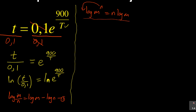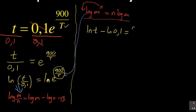Using these two laws — I'll apply the quotient law on the left-hand side and the power law on the right-hand side. On the left I'll have ln T minus ln 0.1. On the right, 900 over T is the exponent, so it drops down: 900 over T times ln e.